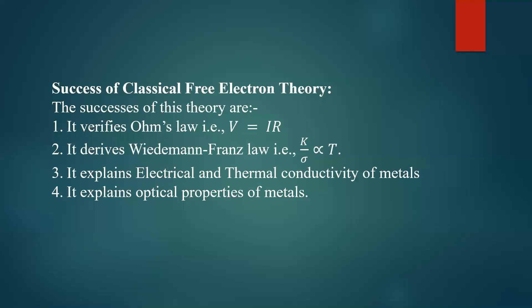There are more failure points compared to the success points. That is why the classical free electron theory fails to explain many phenomena and many experimental observations. That is why we have to use the Sommerfeld theory in order to understand the properties of metals properly. What are the failure points? We will consider them one by one.